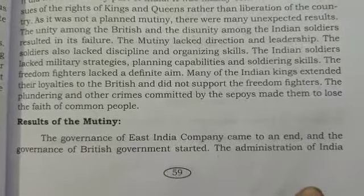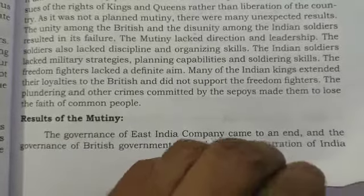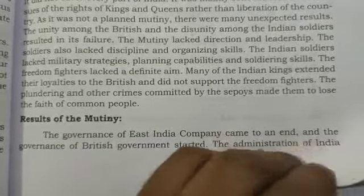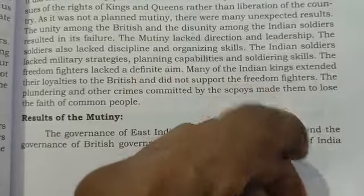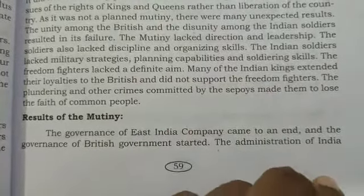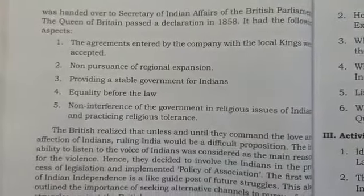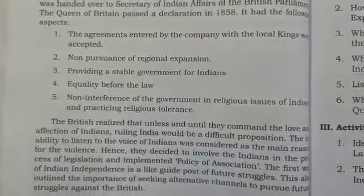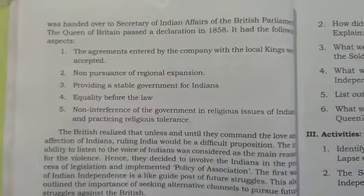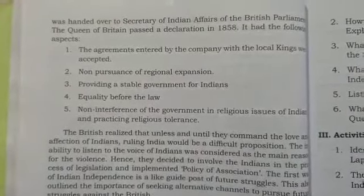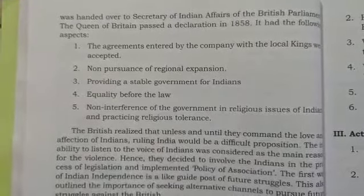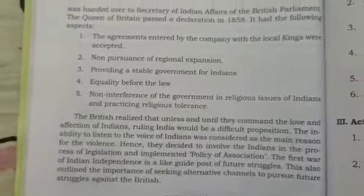These are the reasons why the revolt failed. As a result, the governance of the East India Company came to an end, and the governance of the British government started. The administration of India was handed over to the Secretary of State for India of the British Parliament.